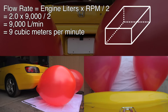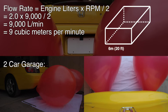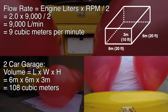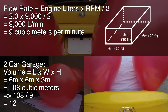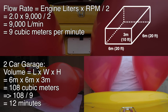If we have a two car garage 6 meters wide by 6 meters deep by 3 meters high, this gives us a volume of 108 cubic meters. 108 cubic meters divided by our volumetric flow rate of 9 cubic meters per minute would mean it would take 12 minutes for all of the air in a garage of this size to pass through the Honda, assuming it were at wide open throttle at the rev limit.